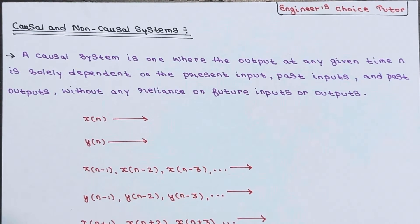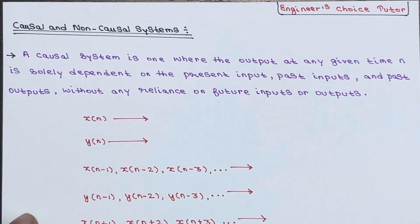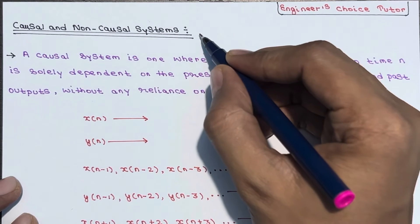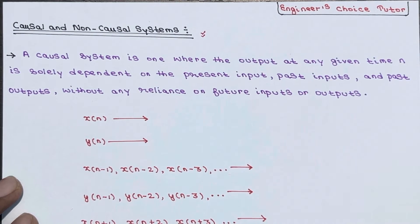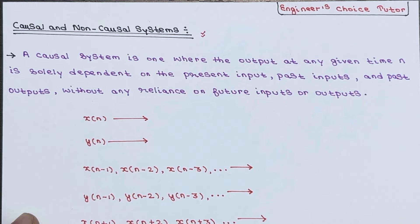Hi everyone, in this lecture we will be discussing causal and non-causal systems. It is one of the important topics you should know in discrete time signals and systems. Questions will come on this part — check whether the system is causal or non-causal — so you should know which systems are called causal and which are called non-causal.